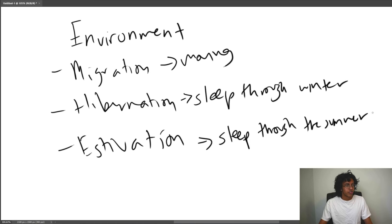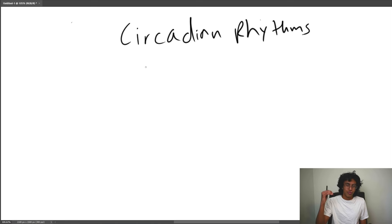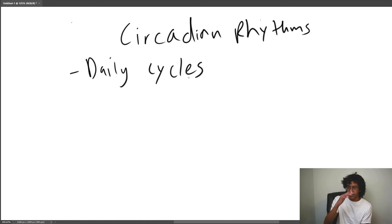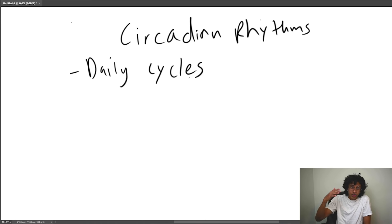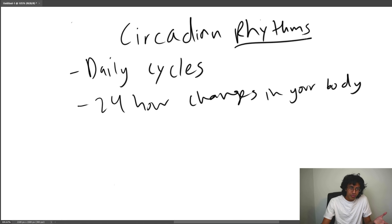A more important concept is circadian rhythms. It sounds fancy, but it's literally just your body's daily rhythms — the 24-hour cycle. The reason you feel sleepy at night is because, due to these circadian rhythms, your body starts secreting melatonin in response to changing light levels throughout the day. All you really need to know about circadian rhythms is that they are daily cycles that happen every 24 hours.